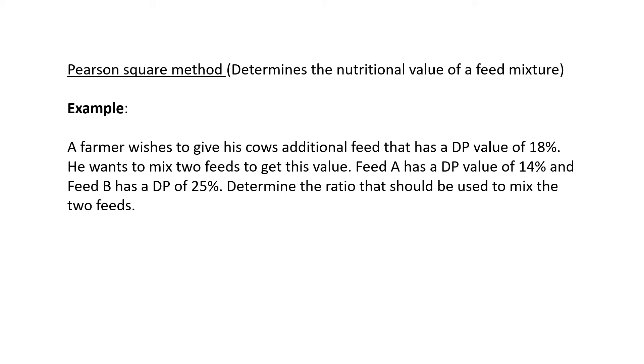He wants the feed at the end to be 18% protein. He wants to mix two feeds to get this value. Feed A has a protein value of 14% and Feed B has a protein content of 25%. Determine the ratio that should be used to mix the two feeds.